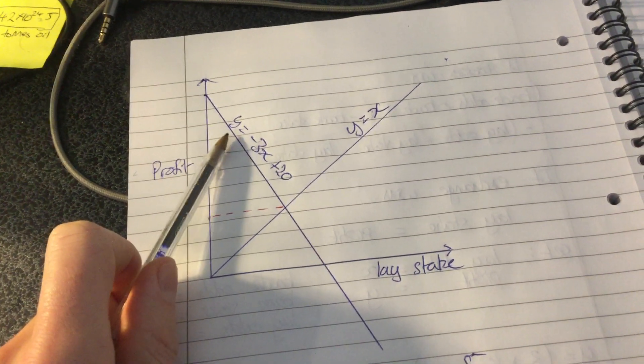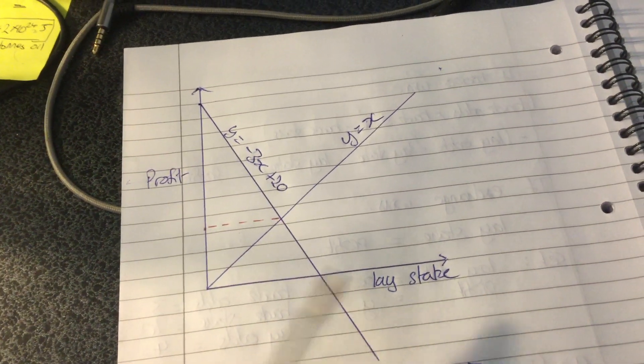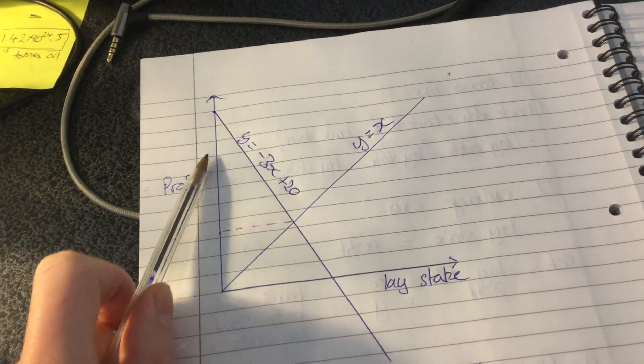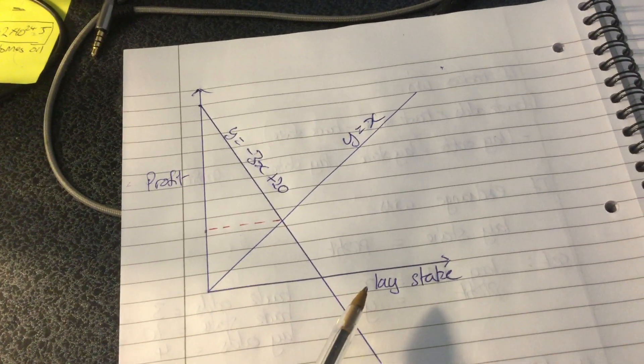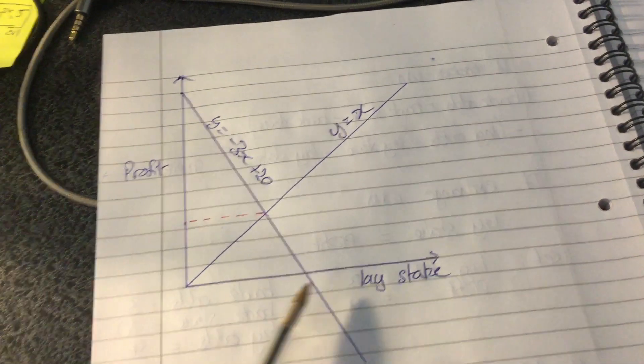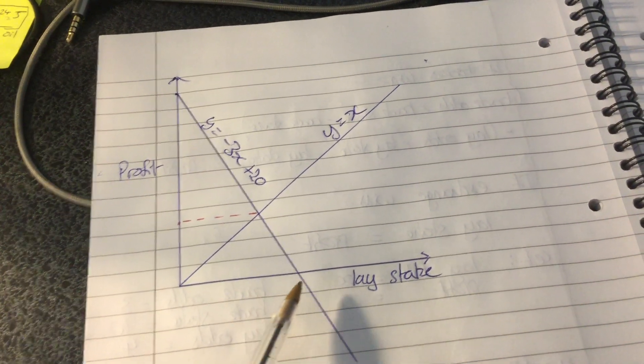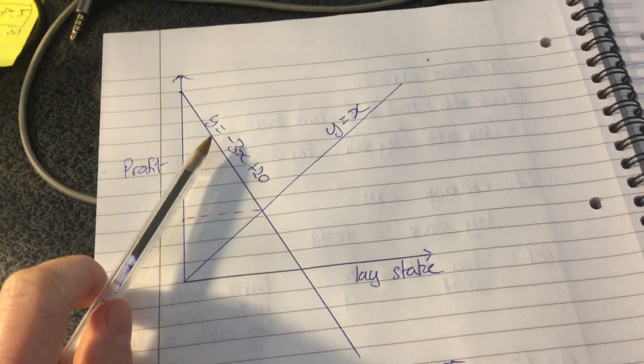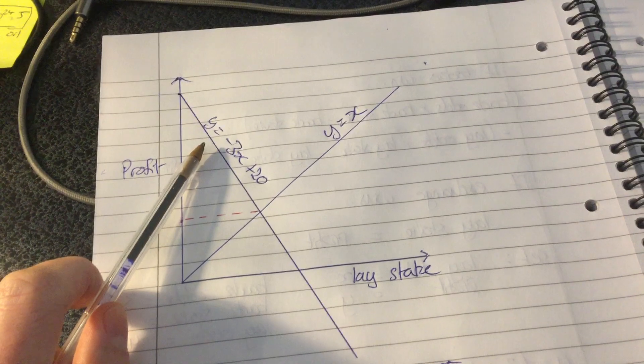Plotting those relationships, this line here is if the bookies win. On the y-axis we've got our profit, so increasing profits as we go up. And on the x-axis we've got our lay stake, so increasing lay stakes as we go along the x-axis. For this line you can see that it's at maximum when our lay stakes at a minimum zero.